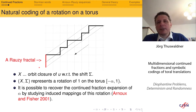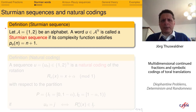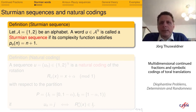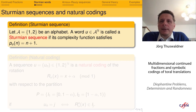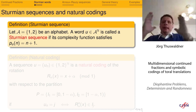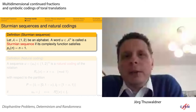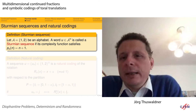Let me give more exact definitions. The sequences of 1s and 2s we produce have low complexity. For aperiodic sequences, there is a class with lowest possible complexity — Sturmian sequences. Over a two-letter alphabet, a one-sided infinite word is called a Sturmian sequence if its complexity function satisfies p(n) = n + 1. This means if you look at the sequence and take out words of length n, you will only see n+1 different words of length n. This is the definition of Sturmian sequences.